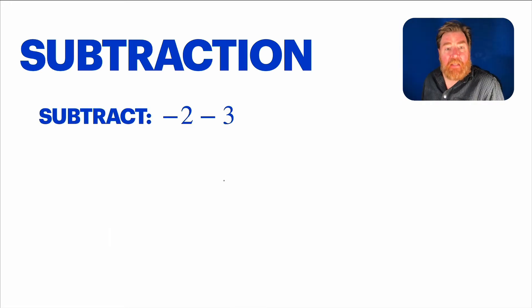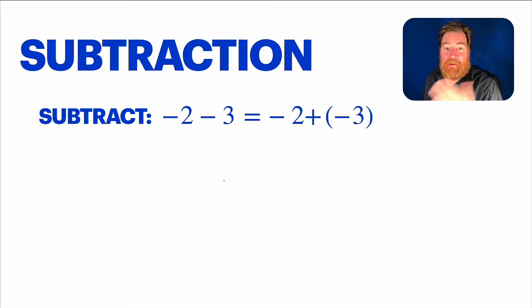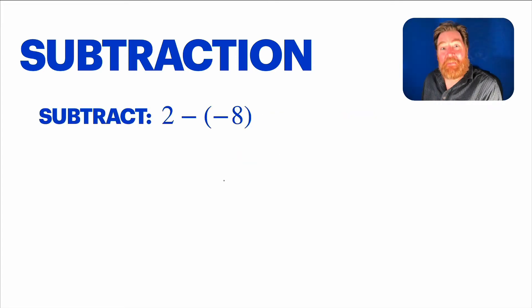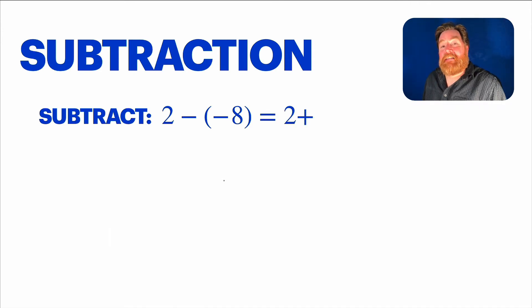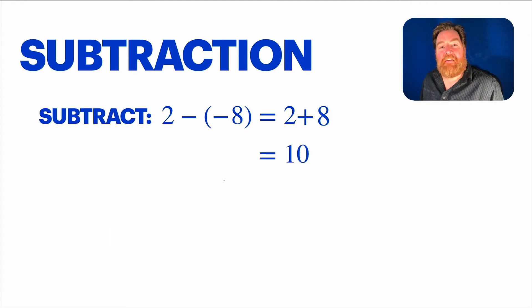Here's another one: negative two minus three. Same deal. Subtracting three is the same as adding the opposite of three — namely negative three. So now we have negative two plus negative three. No annihilating, just a bunch of negatives. How many? Negative five. Last example: two minus negative eight. Subtracting negative eight is the same as adding the opposite of negative eight. The opposite of negative eight is eight. So two plus eight — just positives. Ten.